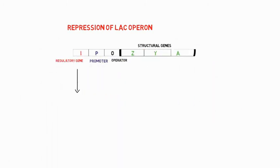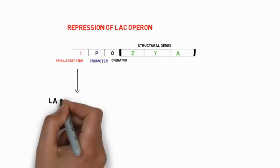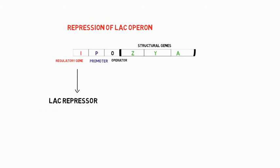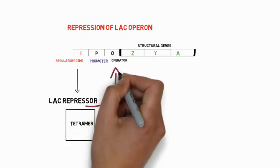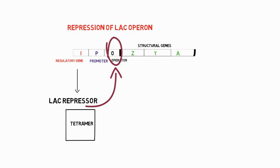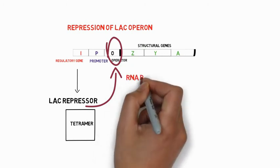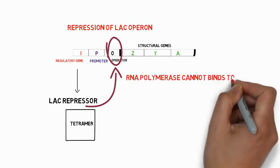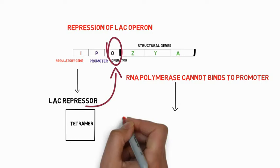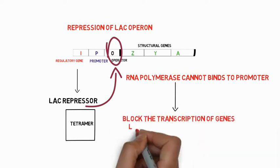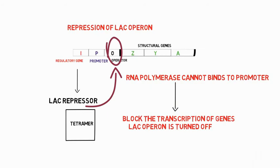The regulatory gene produces the lac repressor at a constitutive or constant rate. This is in tetrameric form and this regulatory protein binds to the operator site and blocks the binding of RNA polymerase to the promoter site. When the RNA polymerase cannot bind to the promoter, it blocks the transcription of structural genes and lac operon is turned off when lactose is absent. So lac repressor is a negative regulator of lac operon.